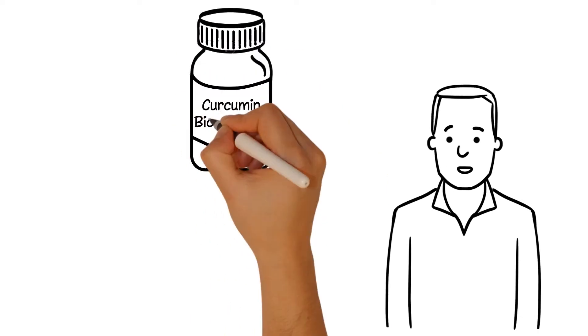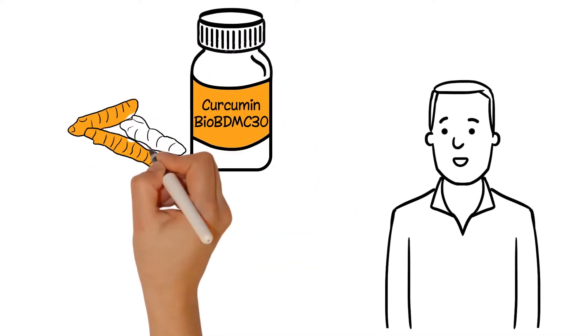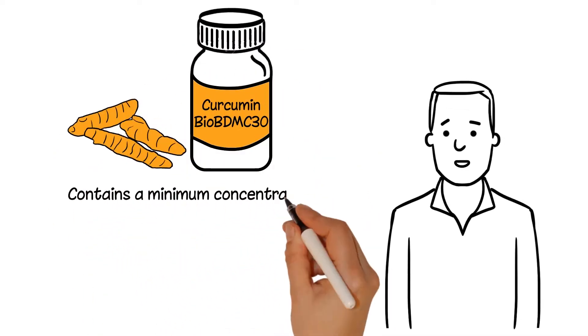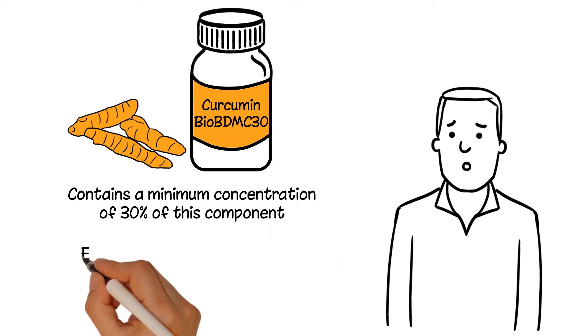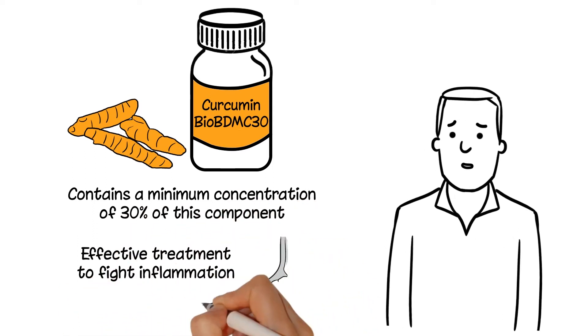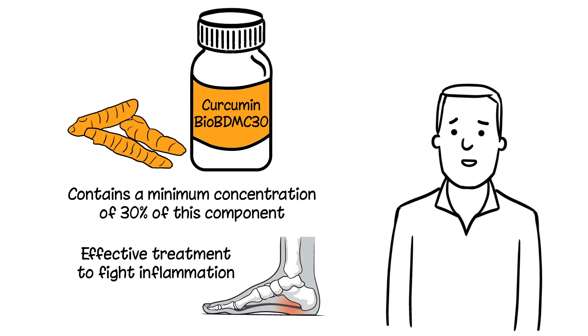The patented Curcumin BioBDMC contains a minimum concentration of 30% of this component, which makes it an effective treatment to fight inflammation in a way that's very different from regular curcumin.